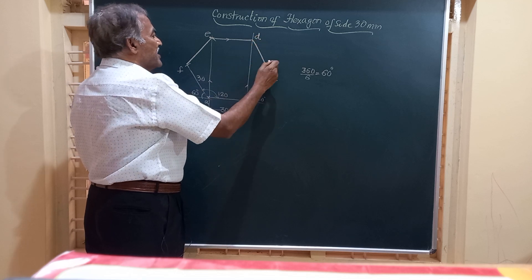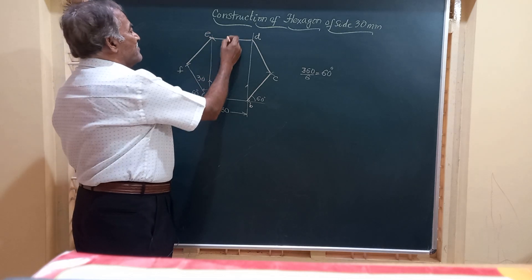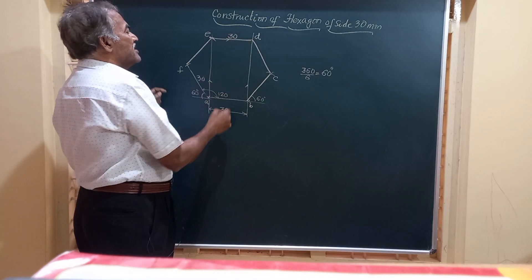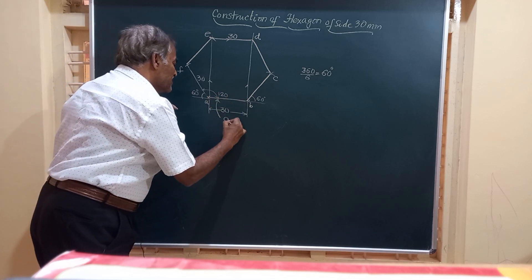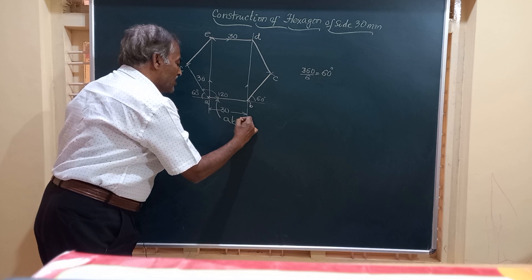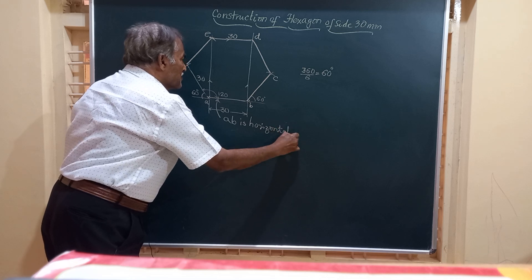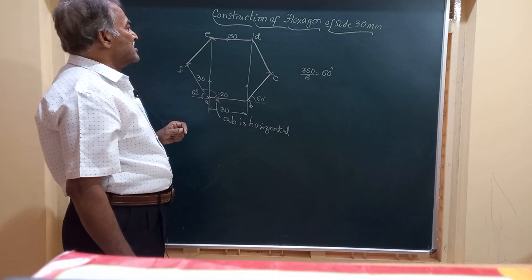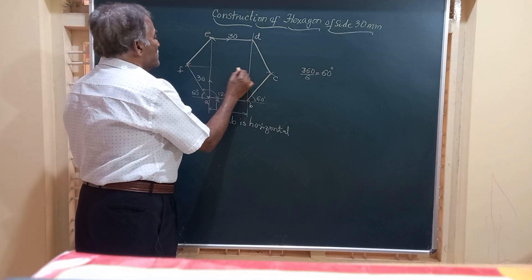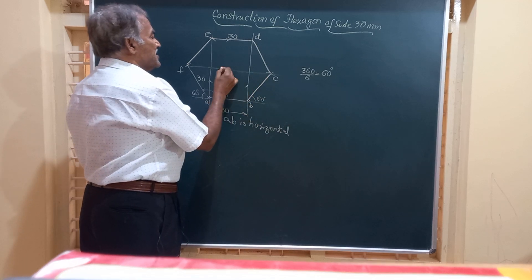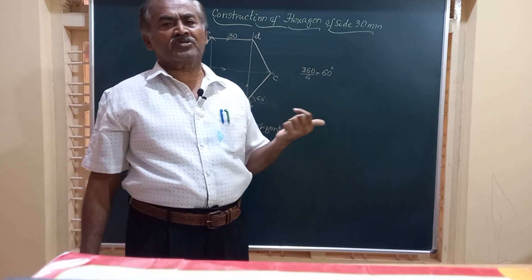Joining C to D gives the last side. So A, B, C, D, E, F is the required hexagon when one of the sides AB is horizontal. As a check, if you draw a horizontal line through F it should pass through C.